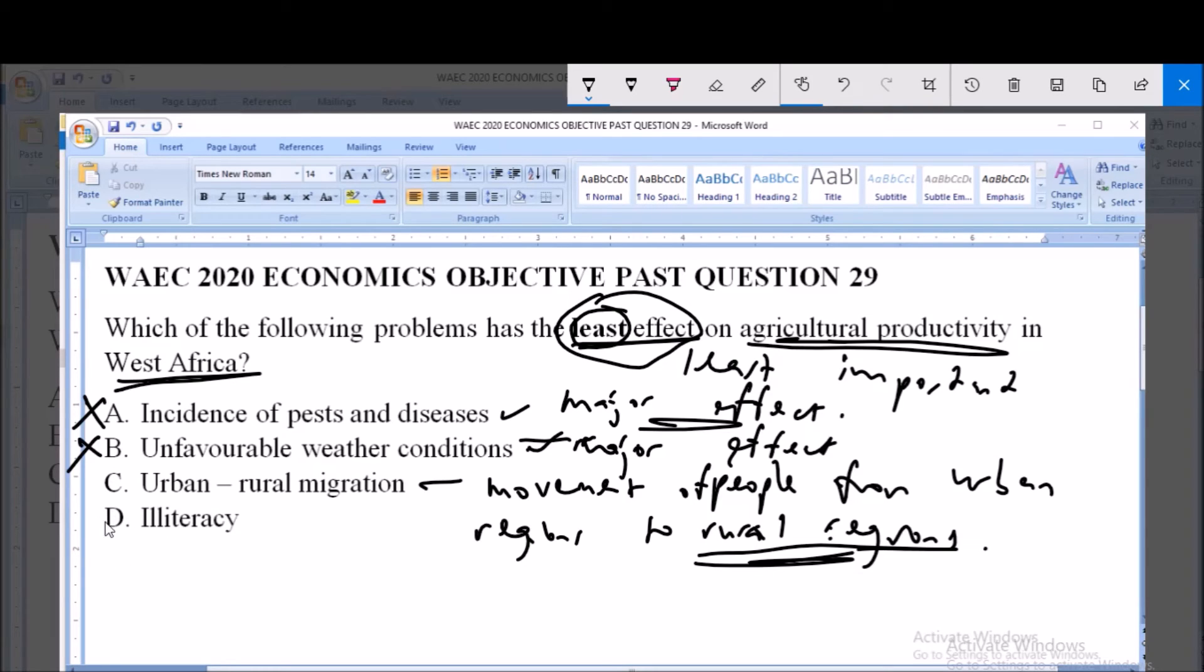Now before we select our answer, let's look at option D. Option D says illiteracy and obviously illiteracy is a major effect or it majorly affects agricultural productivity in Africa.